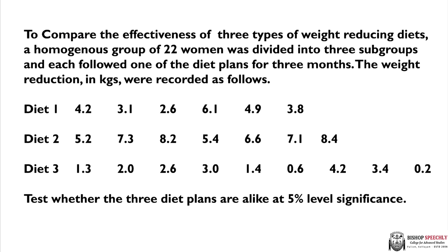In case of diet 1, the weight reduced was recorded as 4.2, 3.1, 2.6, 6.1, 4.9, and 3.8. Diet 2: 5.2, 7.3, 8.2, 5.4, 6.6, 7.1, and 8.4. In case of diet 3: 1.3, 2.0, 2.6, 3.0, 1.4, 0.6, 4.2, 3.4, and 0.2 respectively. Test whether the three diet plans are alike at 5% level of significance.